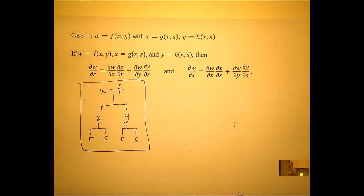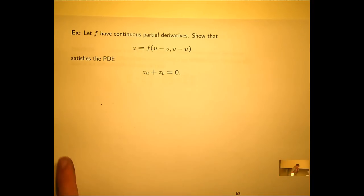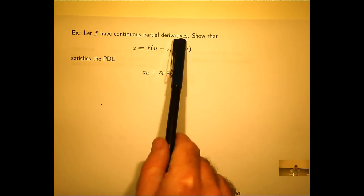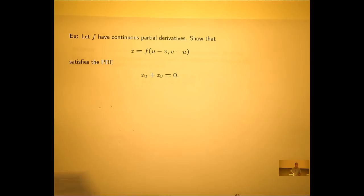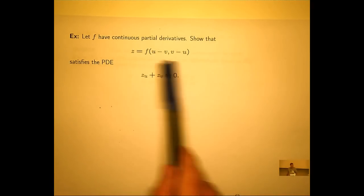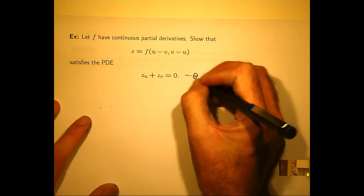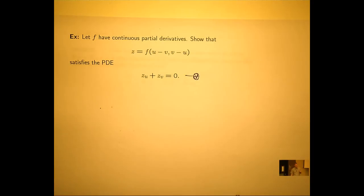Let's have a look at how you can use this particular version. This is a really good example — maybe class test one type worthy. Let f have continuous partial derivatives, in other words f is differentiable. Show that a function with this form satisfies the following PDE. Let's give it a label, because I'll refer back to it a bit later.